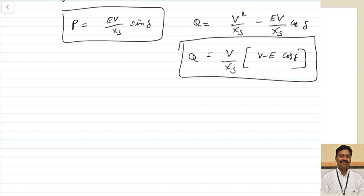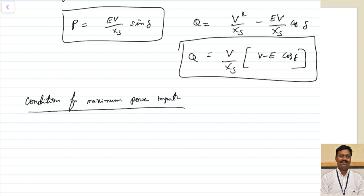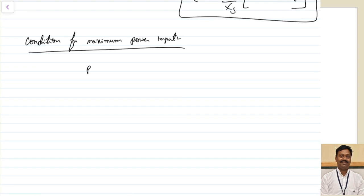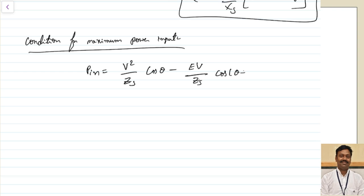Now let us find the condition for maximum power input. Using the general power equation P = (V²/Zs)·cos θ − (EV/Zs)·cos(θ + δ), we differentiate with respect to delta and set dP/dδ = 0. The first term is independent of delta, so its derivative is zero.